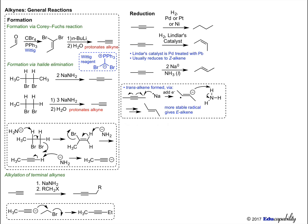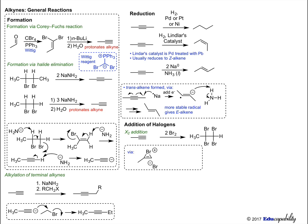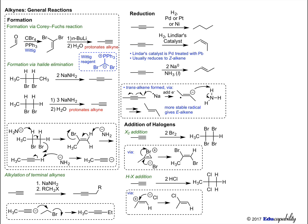Like alkenes, alkynes can add halogens across multiple bonds. Bromination or chlorination gives the tetrahalide. Addition of Br2 across the bond occurs via a bromonium ion. Halides can also be added using hydrobromic or hydrochloric acid. Note the regioselectivity: two equivalents of the halide are added to the more substituted side of the alkyne — we see Markovnikov addition. The proton adds to the less substituted carbon to form the more stable carbocation, and the addition occurs again in the same way to the intermediate chloroalkene.